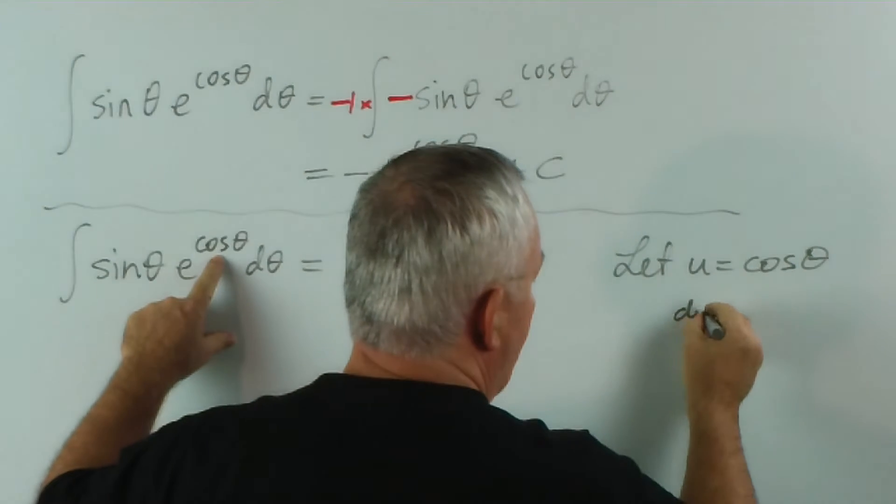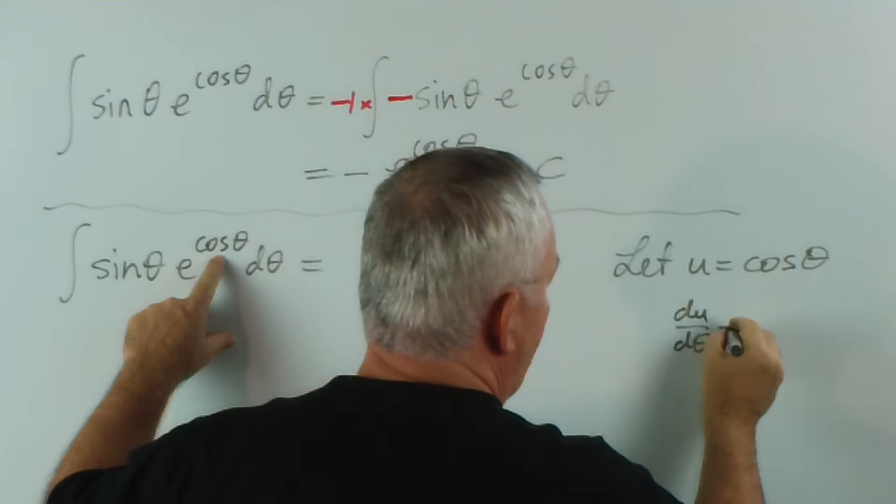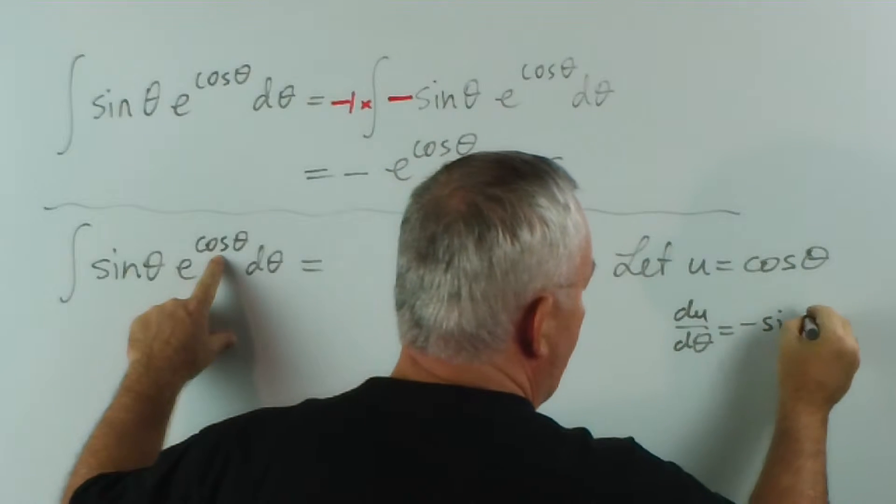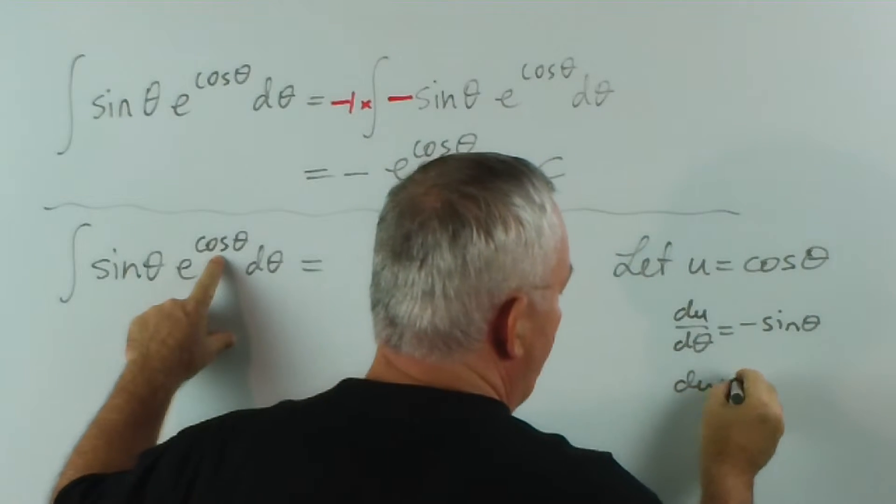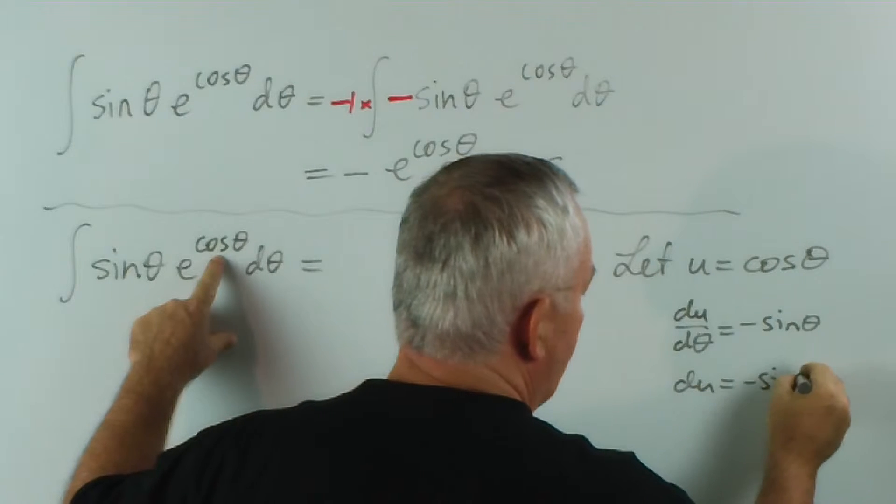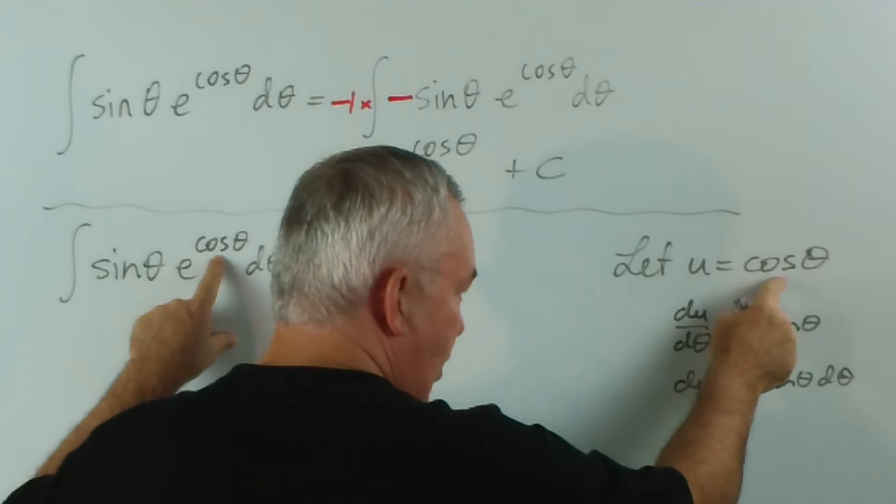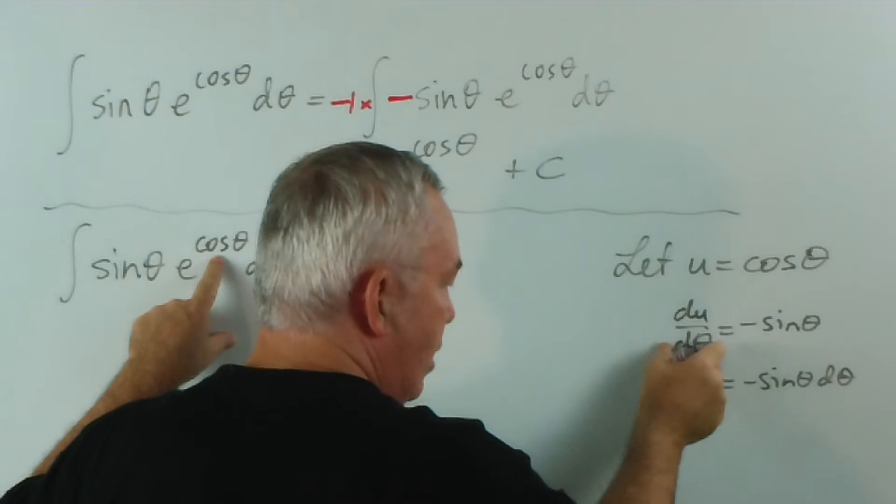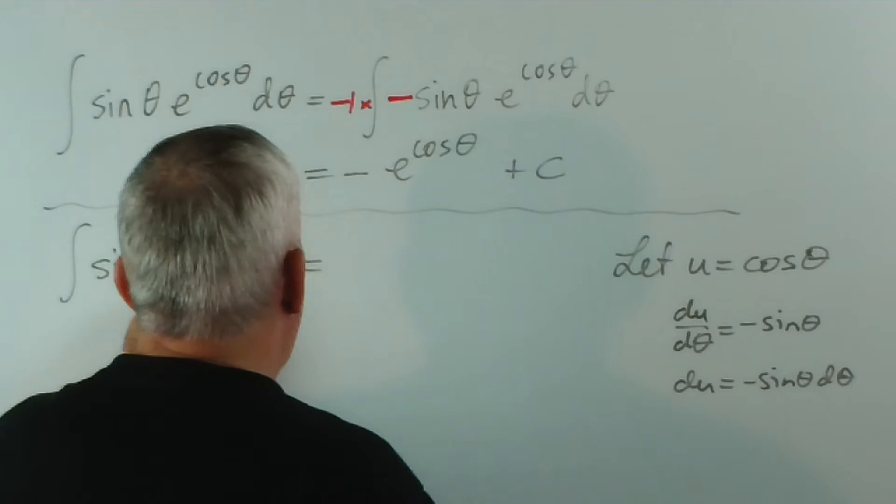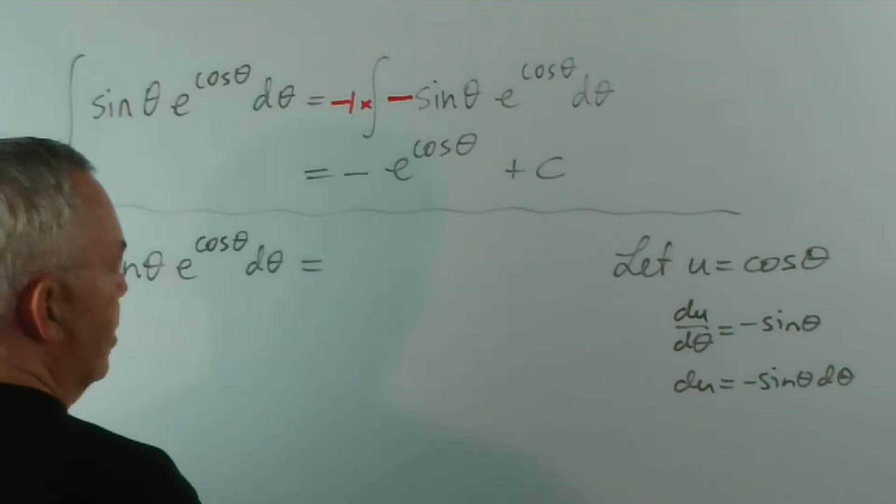And therefore, du d theta is minus sin theta. So du is minus sin theta d theta. So we took the derivative. The derivative of cos is minus sin. Then we took the d theta up here. And now we notice this.